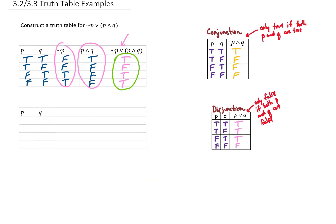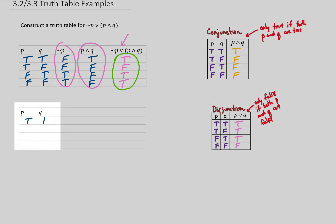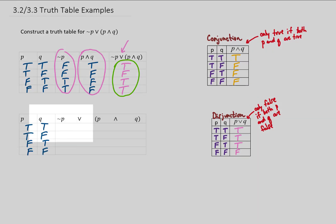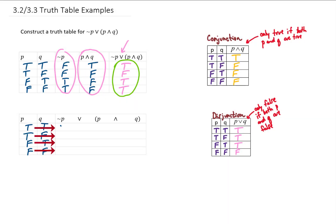Now let's construct the same truth table using a slightly different method. We'll start with our P and Q columns, but this time put our entire statement in the last column and spread it out a bit. Under not P, we're just going to reverse the truth values on P, just like before.